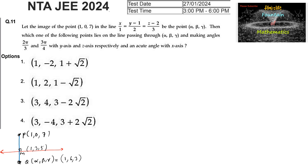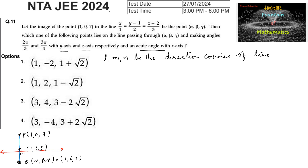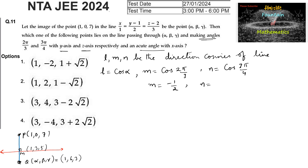We need to find which point lies on the line passing through (α, β, γ) making angles 2π/3 and 3π/4 with the y-axis and z-axis respectively, and an acute angle with the x-axis. Let L, M, N be the direction cosines of the line. Then M = cos(2π/3) = cos(90° + 30°) = −sin 30° = −1/2, and N = cos(3π/4) = cos(90° + 45°) = −1/√2.